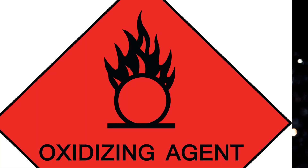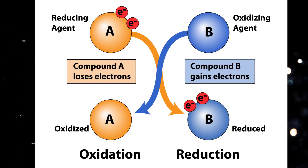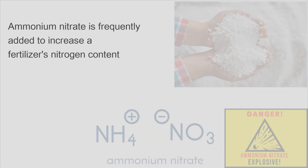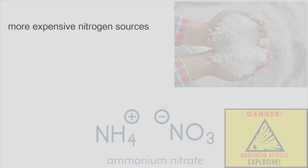Ammonium nitrate is safe by itself, but highly dangerous when contaminated by any kind of fuel, such as oil, because it is an oxidizer. It increases the burning of fuels by increasing the oxygen that's available to those fuels. It's relatively stable under most conditions and is inexpensive to manufacture, making the chemical a popular alternative to other, more expensive nitrogen sources.